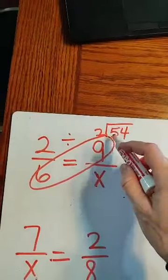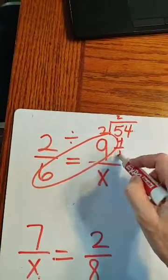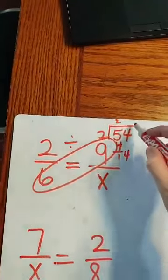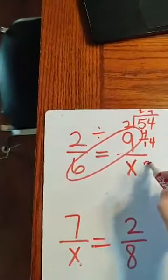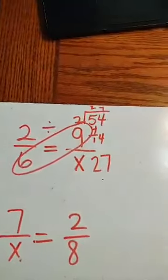So 2 goes into 5, 2 times, 2 goes into 14, 7. So we just found out that x is 27.